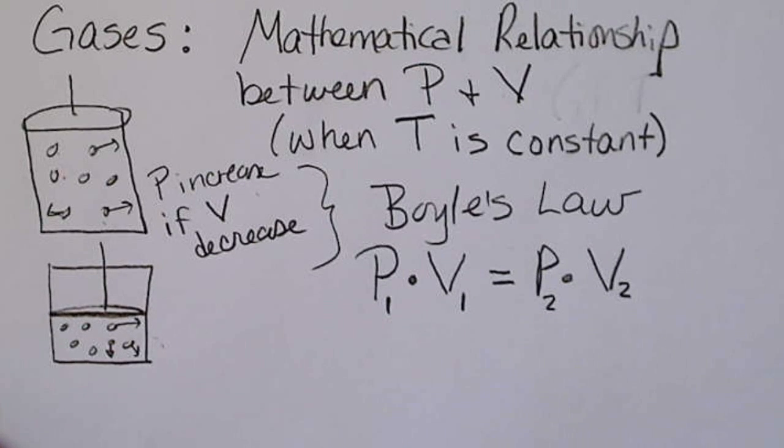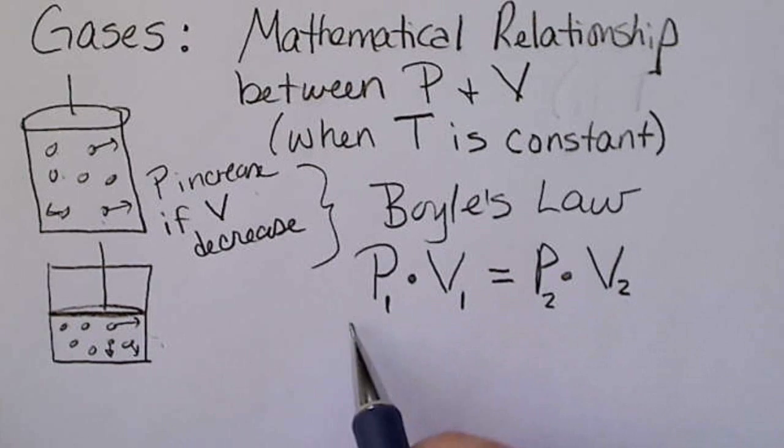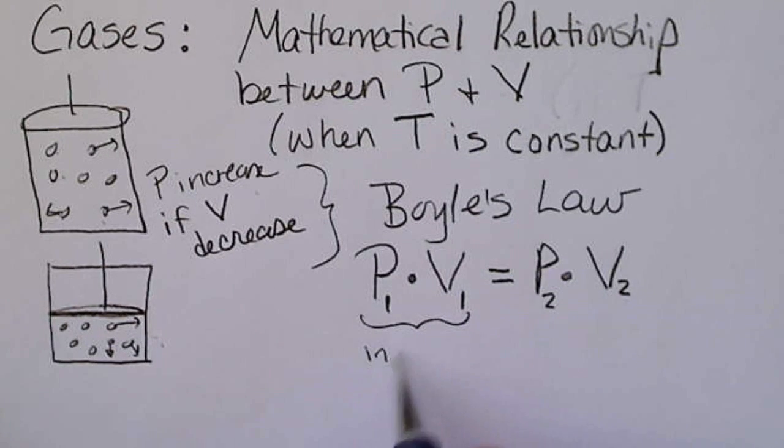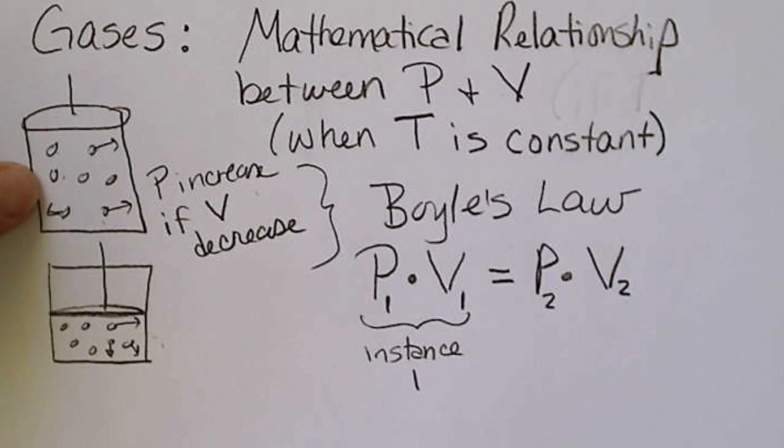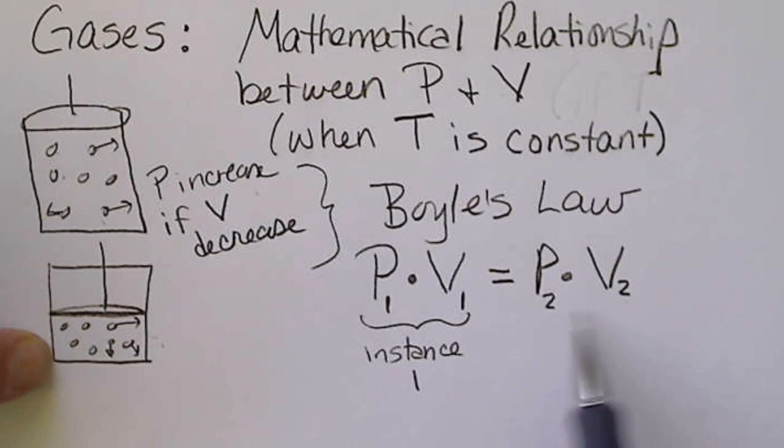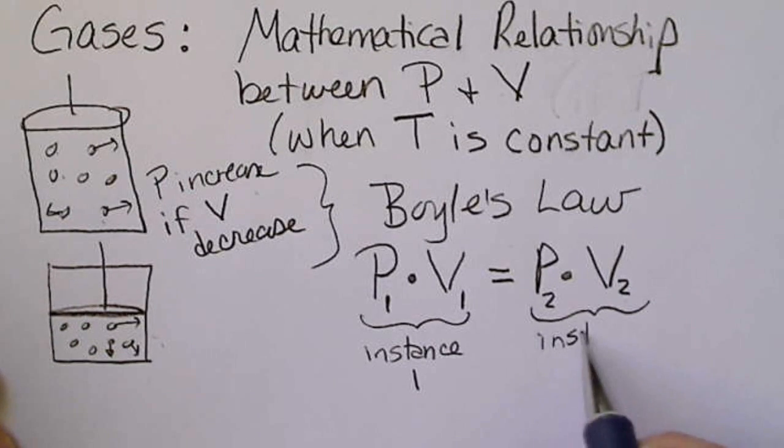One of the ways of writing Boyle's Law is P1V1 equals P2V2. Again, this is instance one, right here. If we have this situation, we know the volume of the gas and we could measure the pressure of the gas. If we cut the volume in half, then the pressure over here is going to exactly double. So this would be the pressure and the volume after we have done something. This would be instance two.